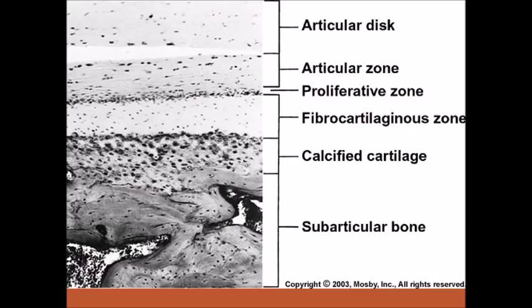This is the histological section for the head of the condyle. The articular disc is dense fibrous tissue. The layers in the head of the mandible are divided into: the articular zone — fibrous tissue like the disc; the proliferative zone — a highly cellular zone; the fibrocartilaginous zone — cartilage mixed with fibrous tissue; the calcified cartilage zone; and then the bone proper itself.